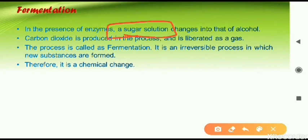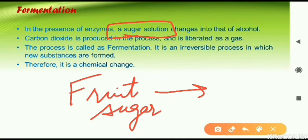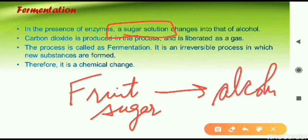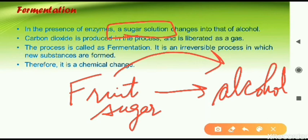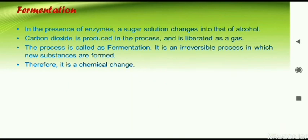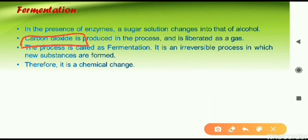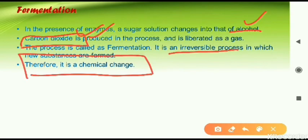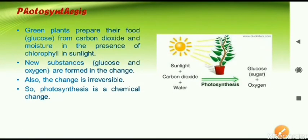The next example is fermentation, which is a chemical process. A sugar solution is taken from the juices of fruits, and that sugar solution is converted into alcohol — that is done in factories. From sugar we are getting alcohol, which is a new product. This conversion happens in the presence of special chemicals called enzymes. In this reaction, alcohol is made and carbon dioxide gas is also produced. The reaction is irreversible, so fermentation is a chemical change.